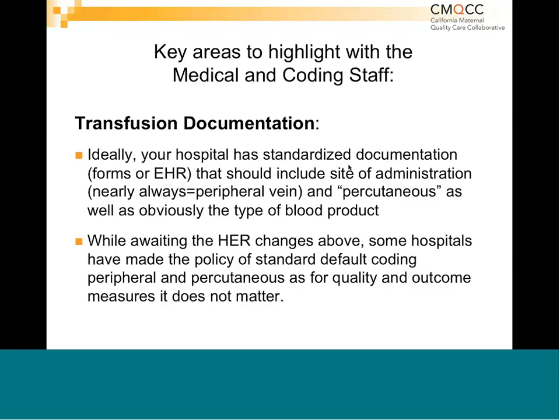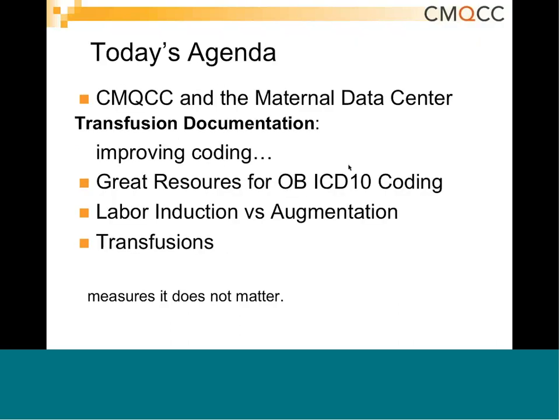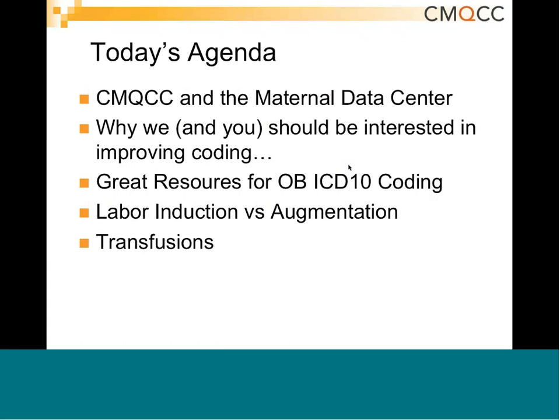Some hospitals have had a policy of a standard default coding — if you can't find it, code it as peripheral and percutaneous, which is really what we want for quality and outcome measures. It really doesn't matter for those measures whether it is central vein or peripheral vein, and it really doesn't matter for the patient. So we went over the CMQCC data center, and we went through induction and augmentation and transfusions — the importance of the interface between documentation and coding and how the two have to work together.